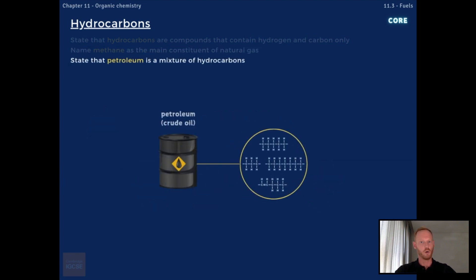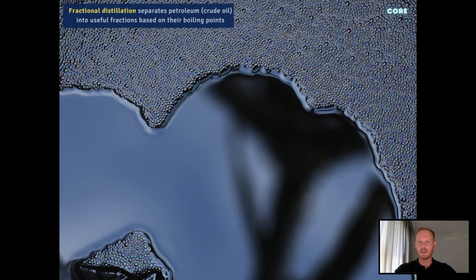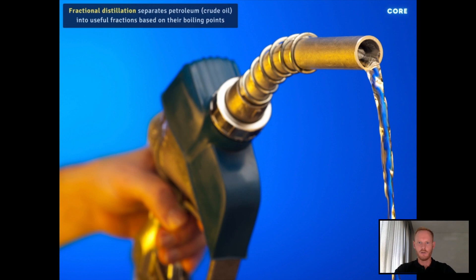Petroleum, or crude oil, by comparison, is a complex mixture containing hundreds, if not thousands, of different hydrocarbon compounds. This mixture can be separated into more useful products, like gasoline and diesel, through a process called fractional distillation.